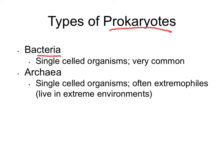One of those is bacteria, which are very common. The other are archaea — a little bit less common, but also single-celled organisms that do not have a nucleus. They're often called extremophiles, meaning they live in extreme environments like places that are very hot, very salty, or very acidic. So both are types of prokaryotic cells that do not have a nucleus.